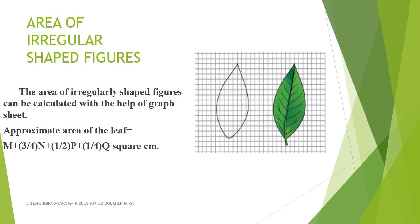Next, count the number of squares which are half of a whole square. Note it to be P.